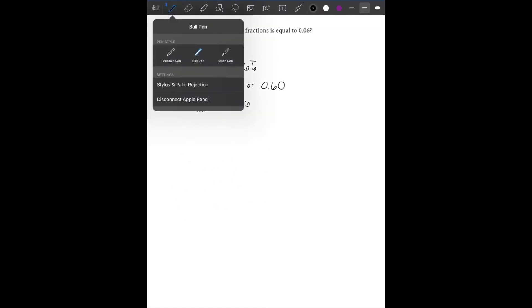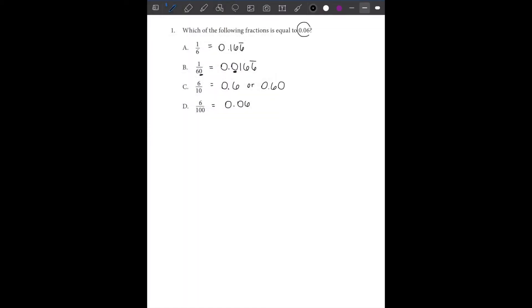We don't need that because that is not what we're given as an answer choice. So now looking at this, what is equal to 0.06? We can cross out A, we can cross out B, we can cross out C, and D would be our answer.